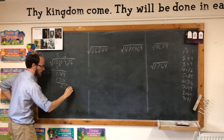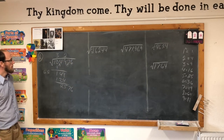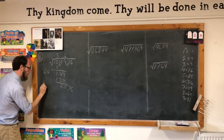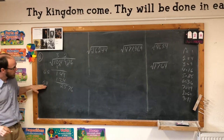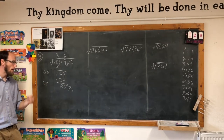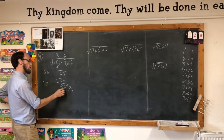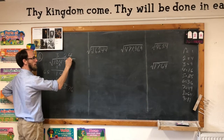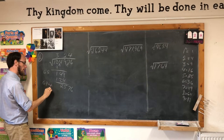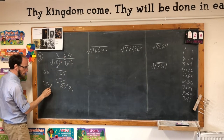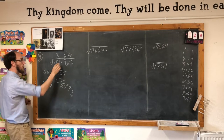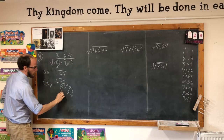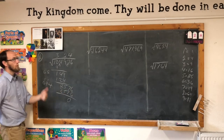Now we'll bring down the 76. Once again we have to play with our 2 and go to the quotient: 32 times 2 is 64. 64 goes into 2,576 about how many times? 6 goes into 25 about how many times? Let's try 4 times. We'll put the 4 here and we put the 4 here. 4 times 4 is 16, carry the 1; 4 times 4 is 16, giving 17, carry the 1; 4 times 6 is 24, giving 25. 2,576 minus 2,576 is 0. We did it — it's very rewarding.